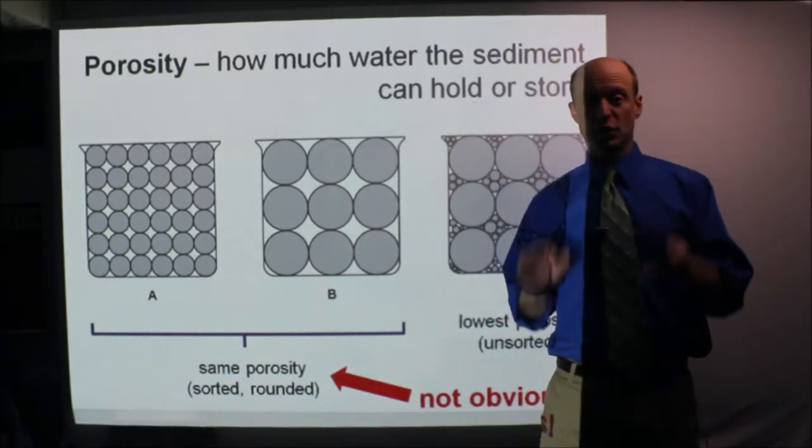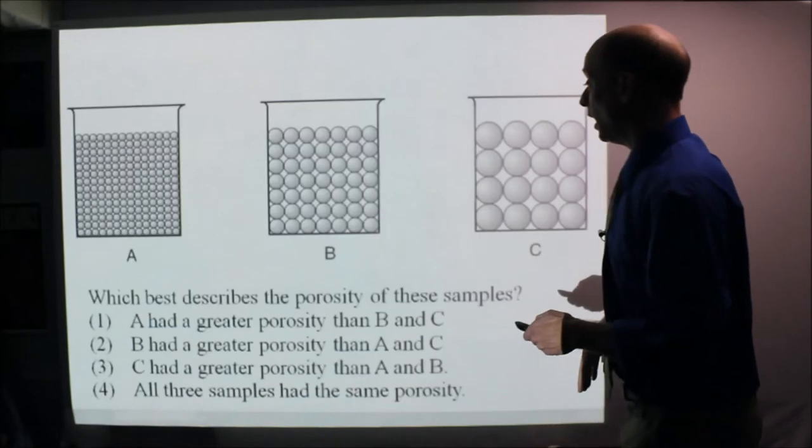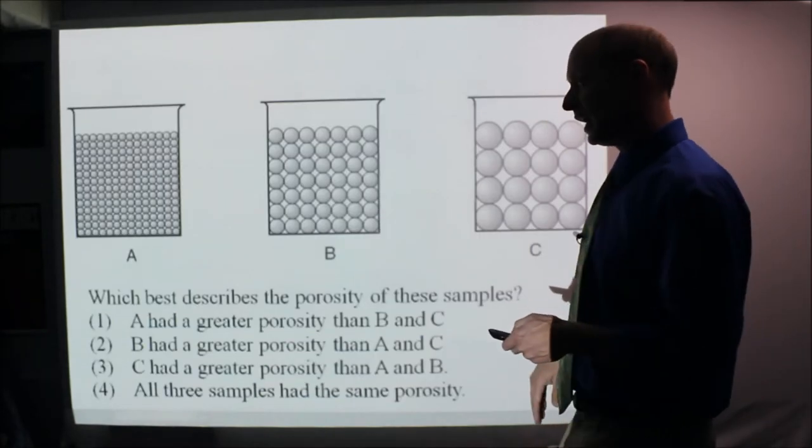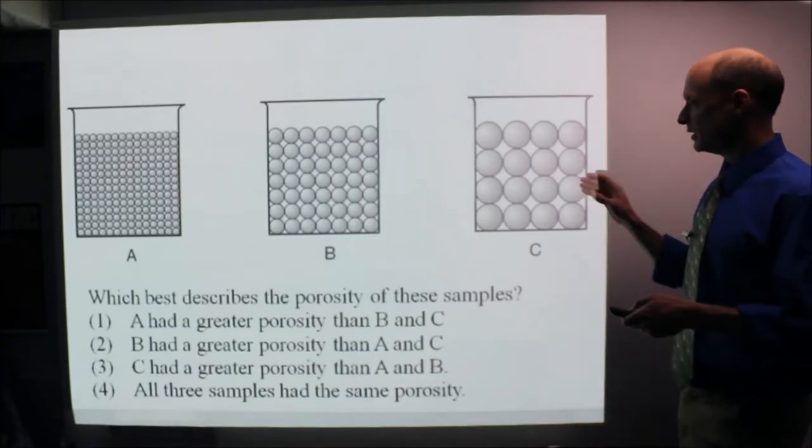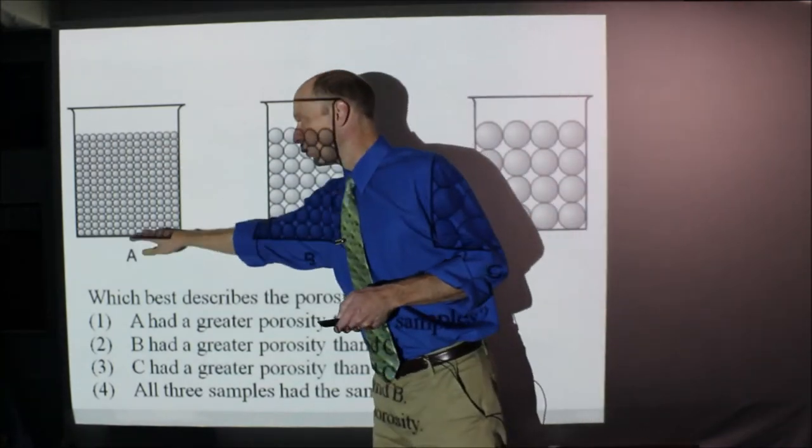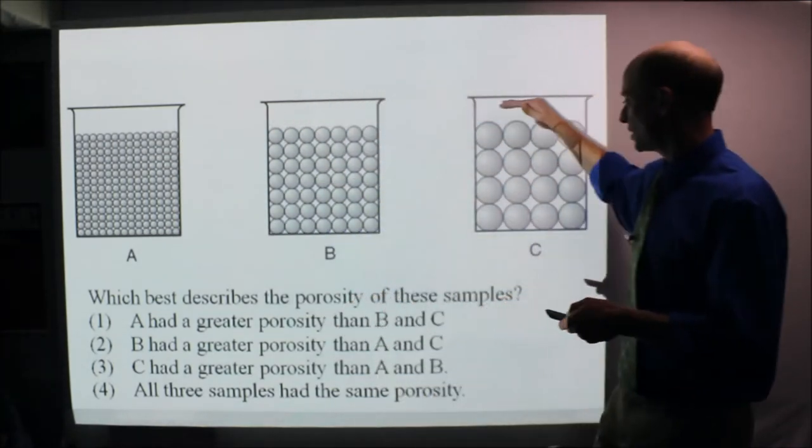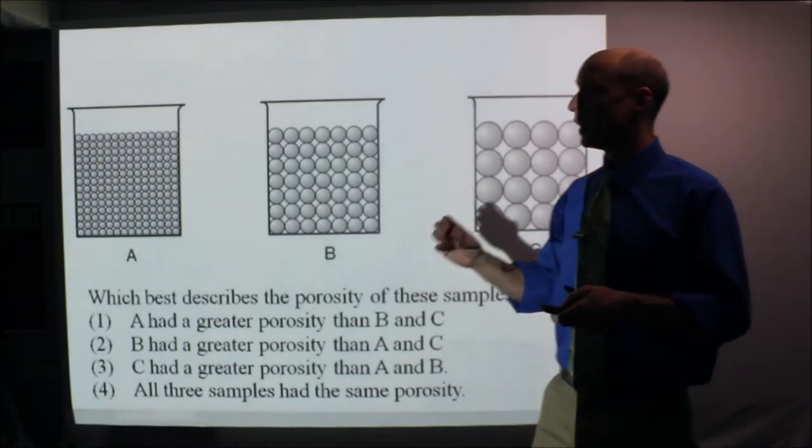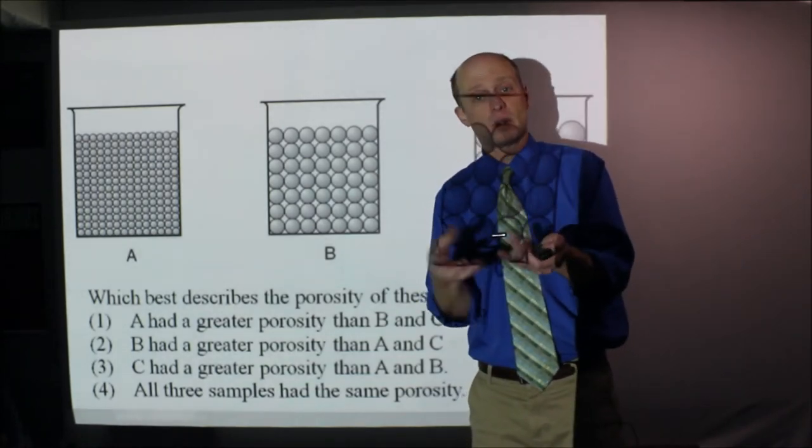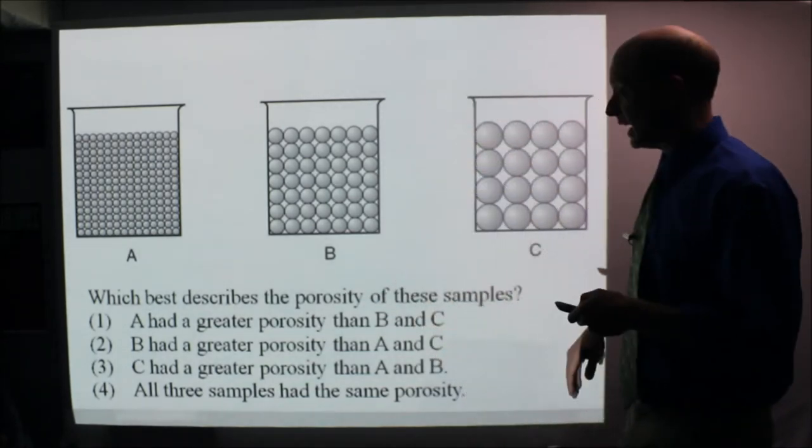Here is a question that we've seen in the past: A, B, and C. Notice they're all really well sorted, all the same size within each container, and they're all really well rounded. They'd be spherical in a real world, in a three-dimensional world. The answer here is which best describes the porosity of these samples.